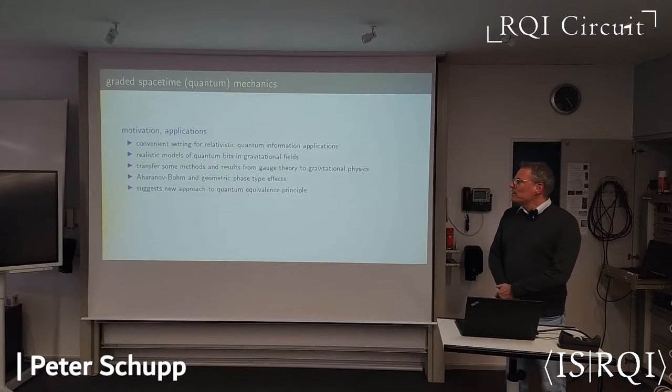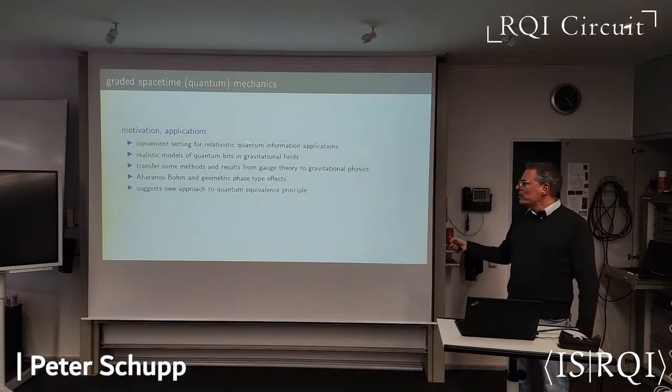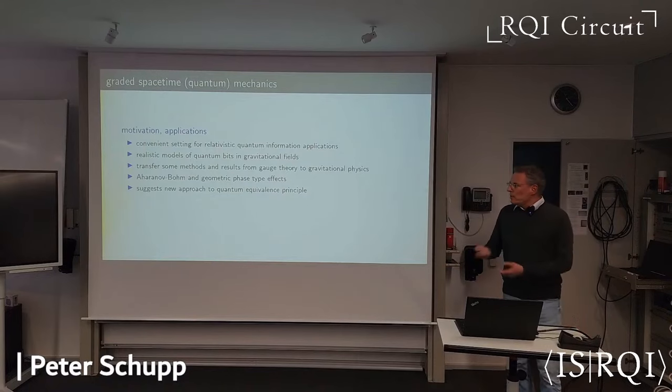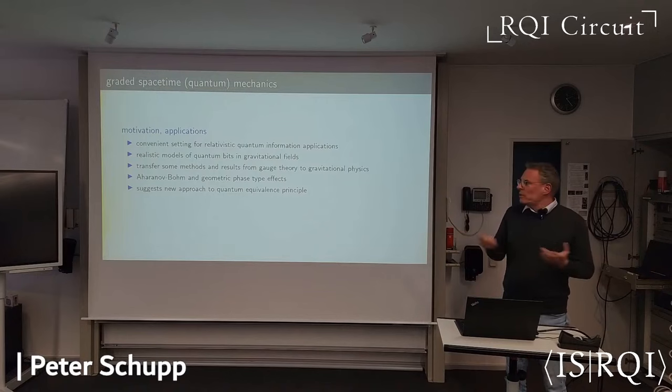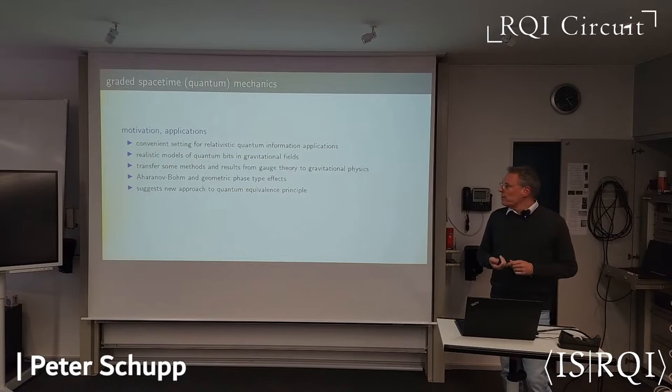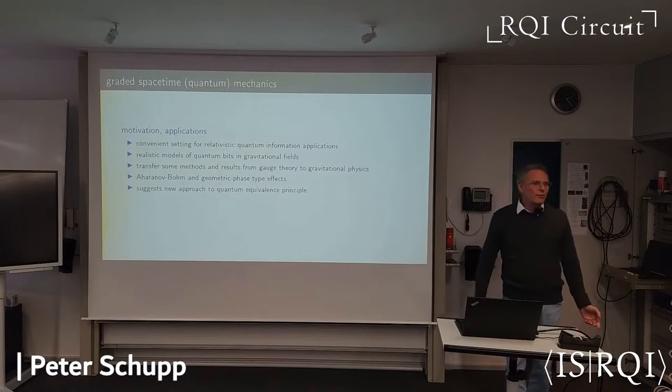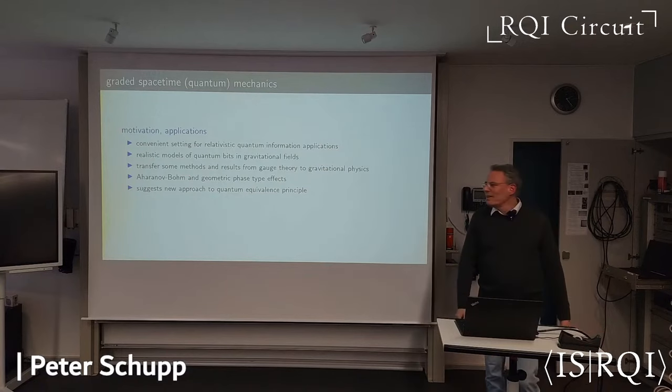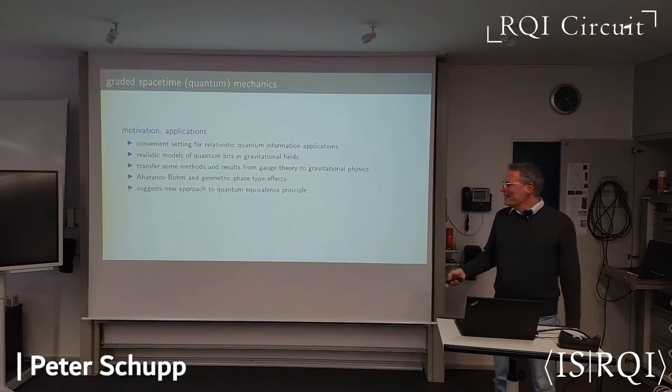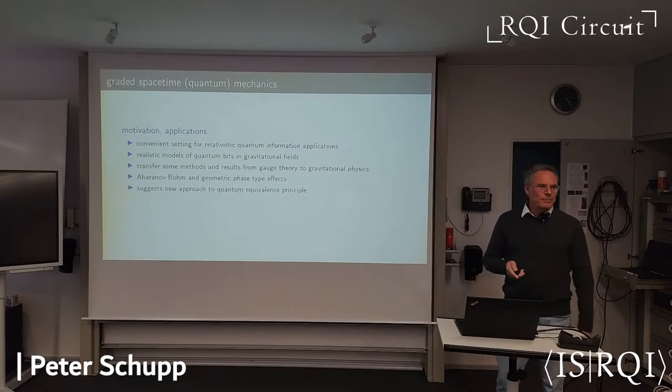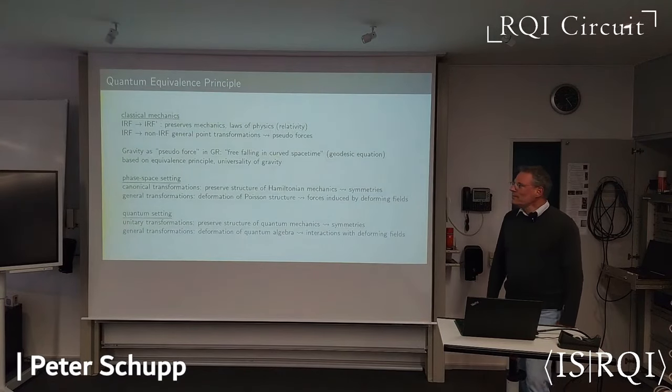Some motivations, applications. Well, I said that a couple of times. I think it's a convenient setting for doing relativistic quantum information applications. So it could lead to realistic models of quantum bits. The idea is to be able to transfer ideas from gauge theory to gravitational physics. And the thing that I really wanted to look at originally was geometric phase effects. But then I came about something different, that I want to show you before closing. This actually this whole thing suggests a new approach to a quantum equivalence principle.